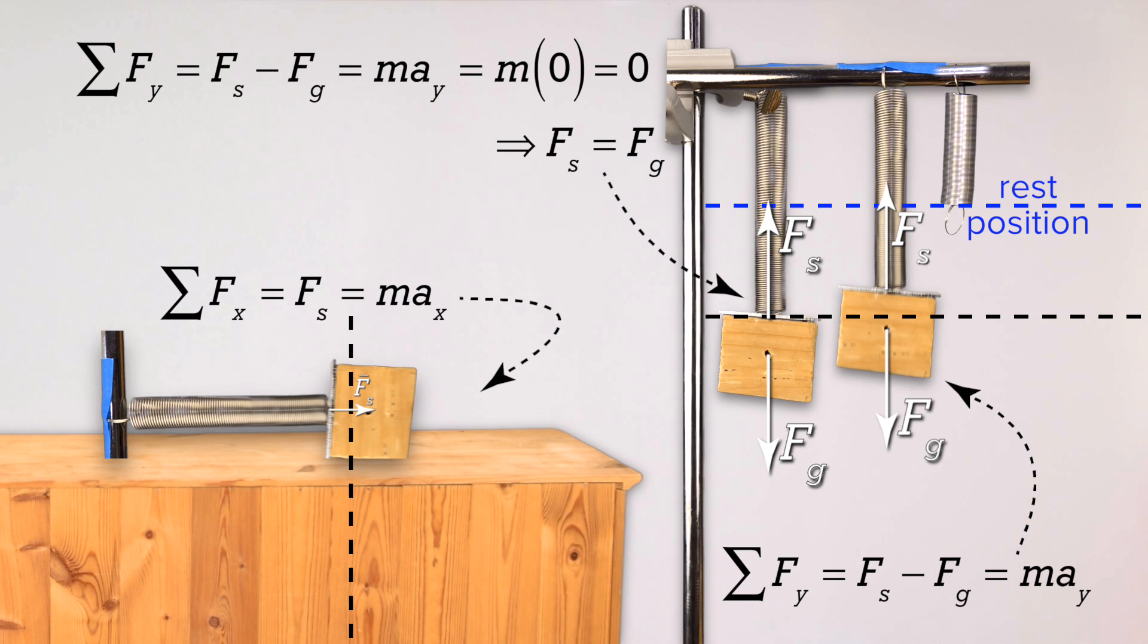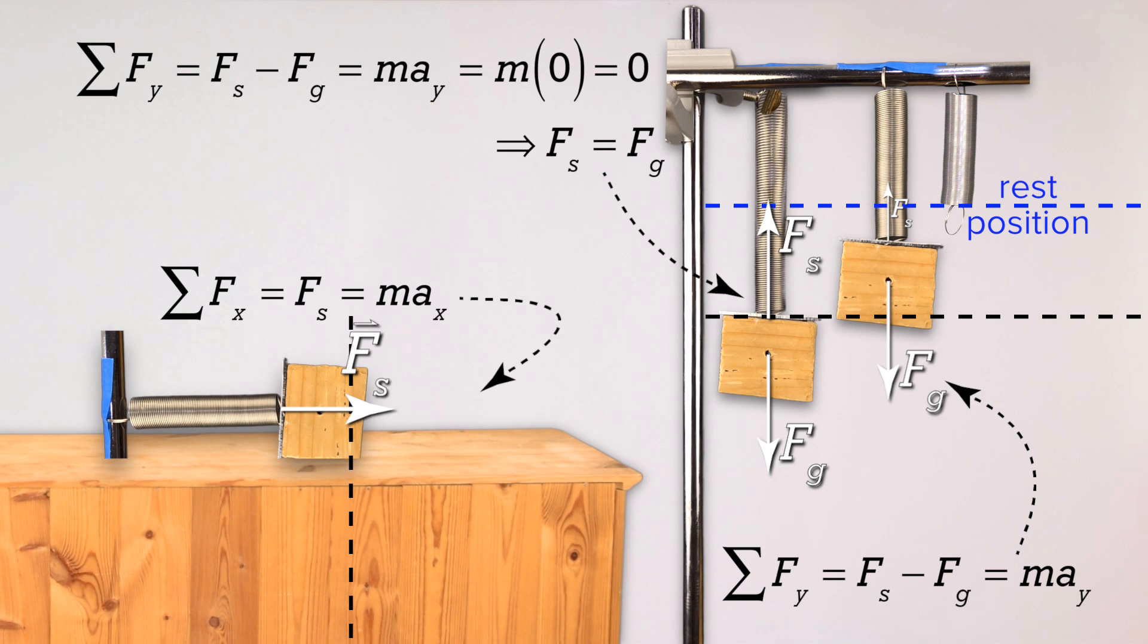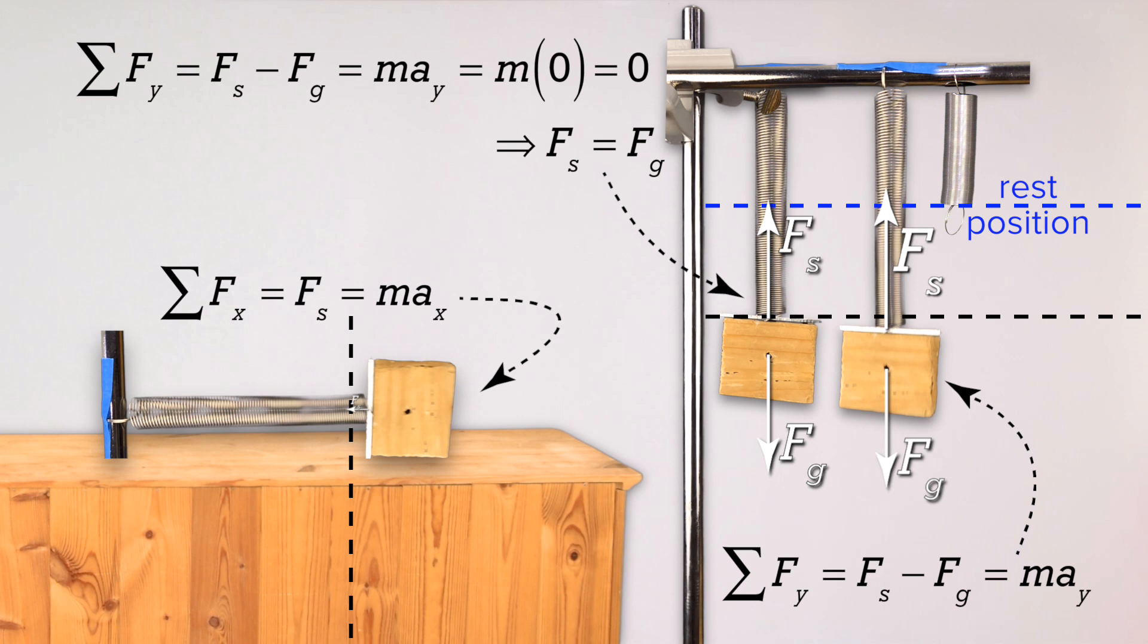In a horizontal mass spring system, the only force acting in the x direction is the horizontal spring force, so that equals the net force in the x direction, which is the restoring force that causes simple harmonic motion.